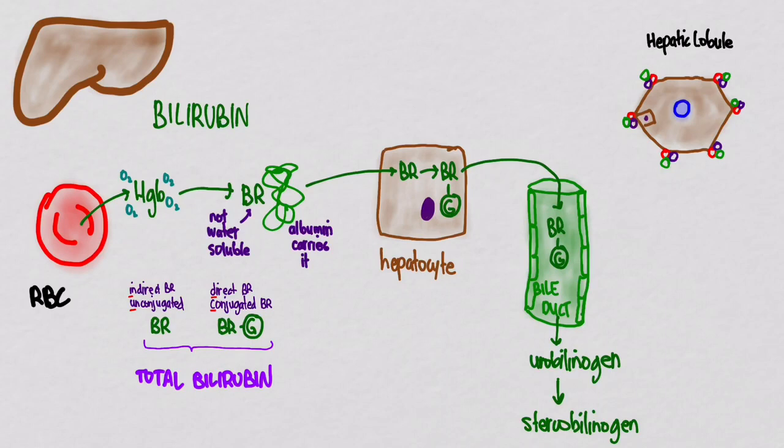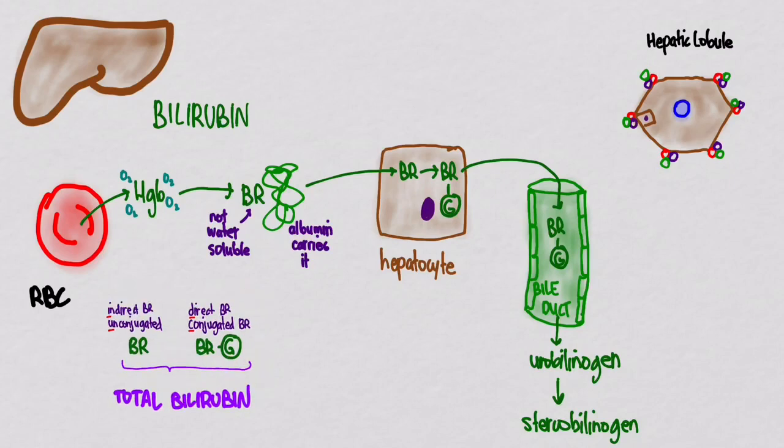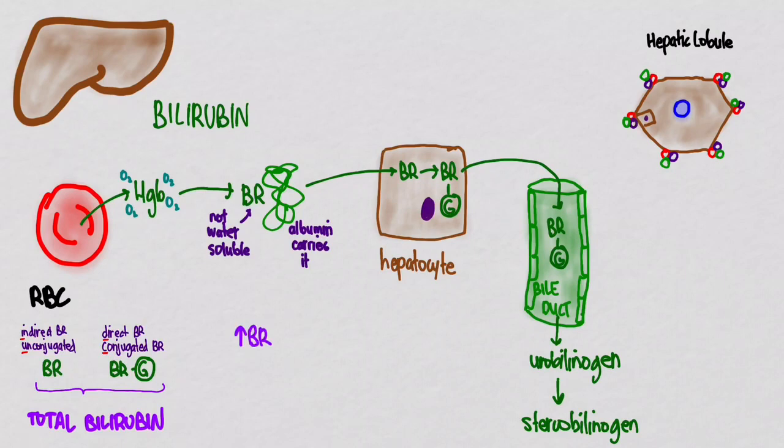So when you order a bilirubin test, you have to ask either for a total bilirubin, which just adds these up, or you want a fractionated one, where you get to see how much of it is indirect or unconjugated, and how much of it is direct or conjugated. So let's just kind of go through a couple of scenarios here with these. So let's say we have a high bilirubin and a normal conjugated bilirubin.